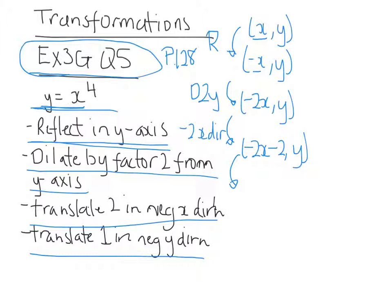Then the last one would have to do, translate 1 in the negative y direction, so that would be negative 1 y direction, so that would be minus 2x minus 2. Now for the y values, we're going to take away another one.